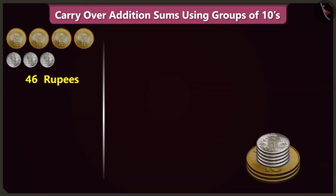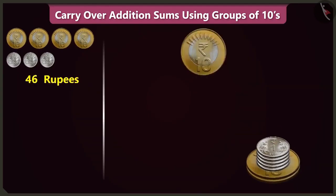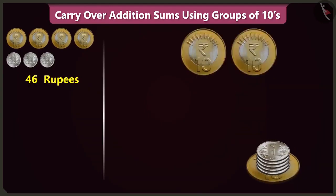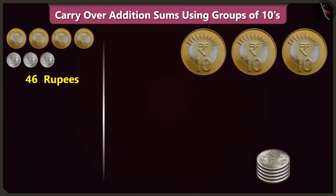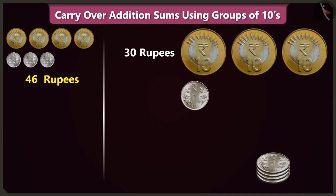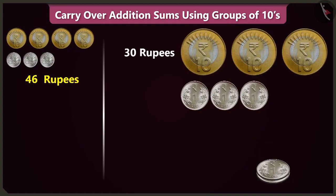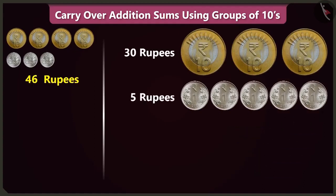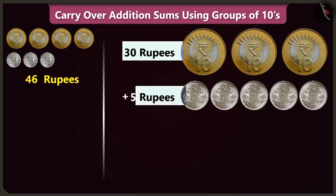In this pile of coins, there are 1, 2 and 3 coins of 10 rupees which is 30 rupees, and 1, 2, 3, 4 and 5 one-rupee coins. So, there are 30 and 5, meaning 35 rupees.